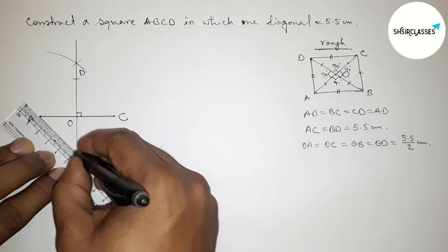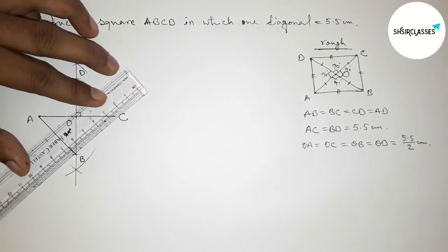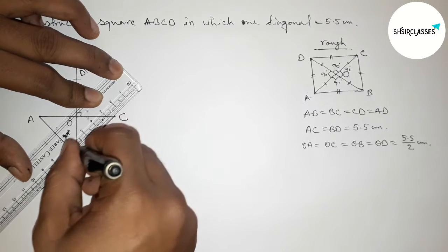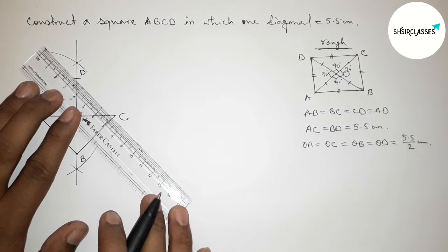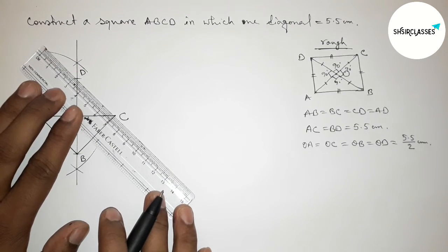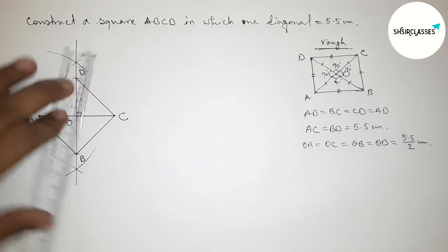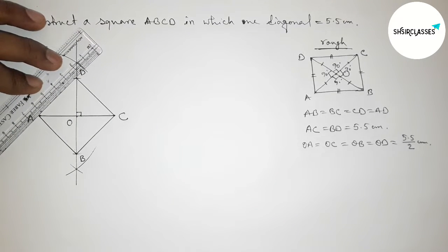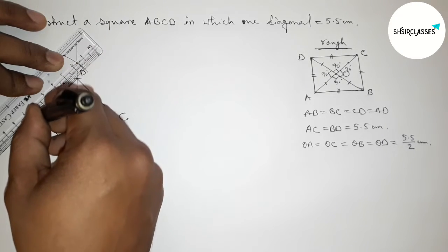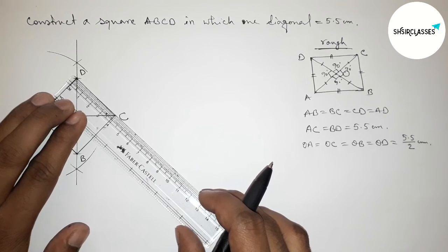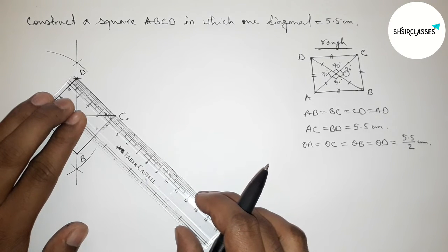Now joining the sides of the square: first joining side AB, then joining side BC, then joining side CD, and finally joining side AD to get the complete square ABCD.